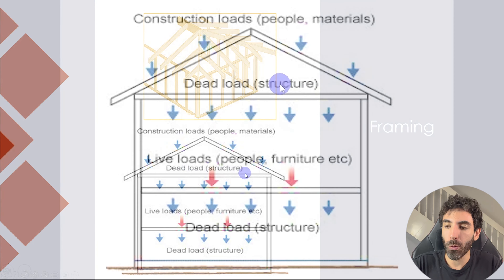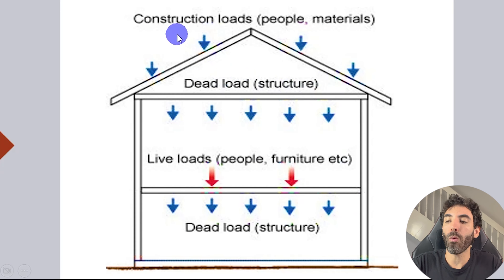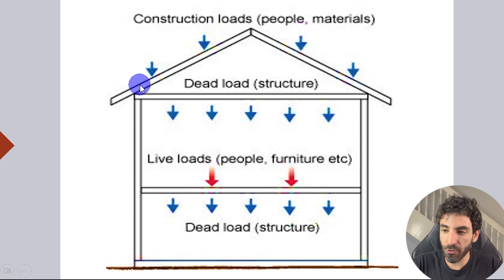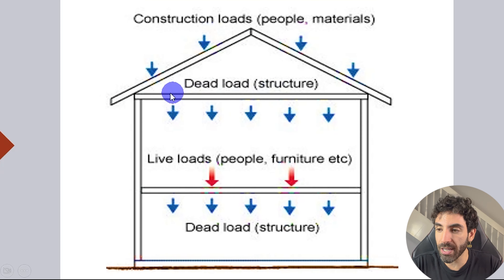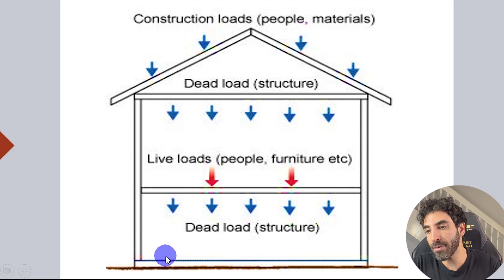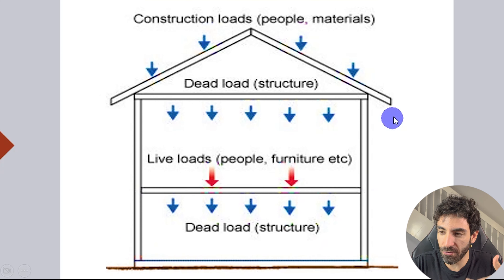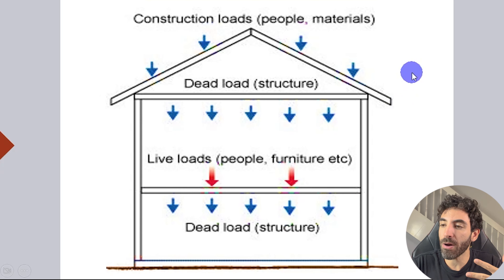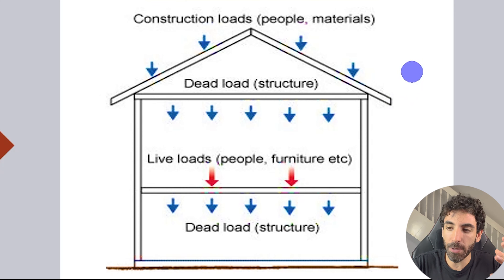Looking at the image below, we can tell that the way this type of structure transfers gravity loads from the roof down to the footing is through the roof or ceiling, then through the walls, next through the floor, then wall framing again and down to the footing. It may seem simple, but it's important that you understand the load paths.